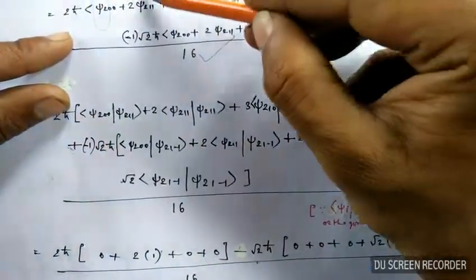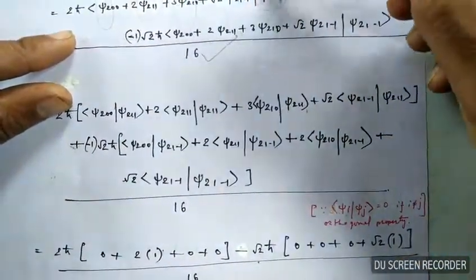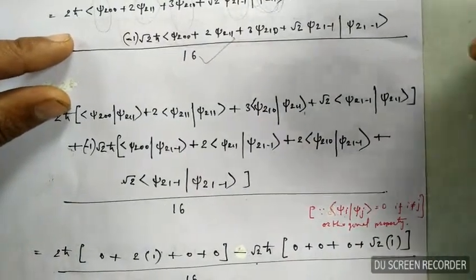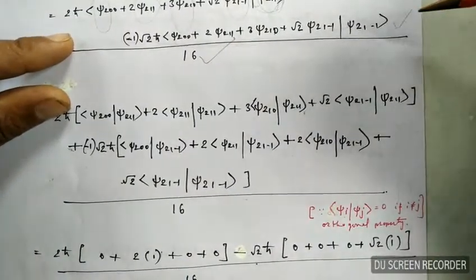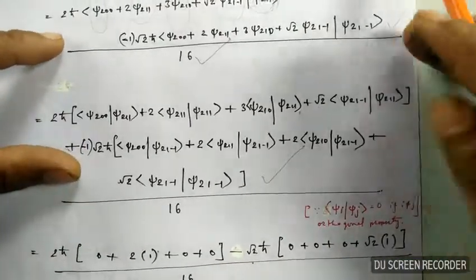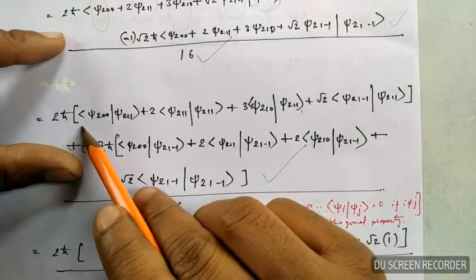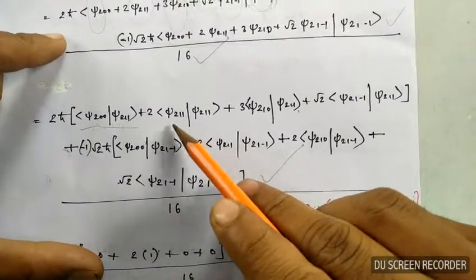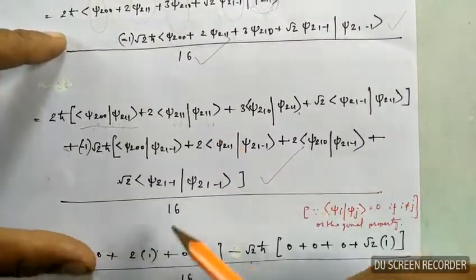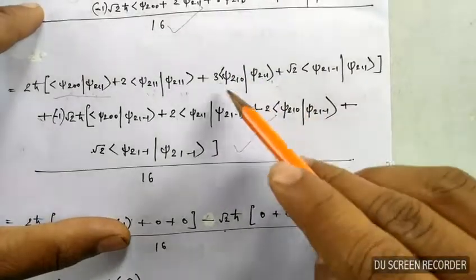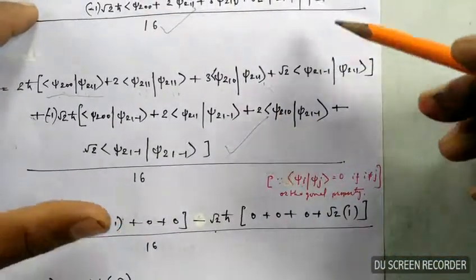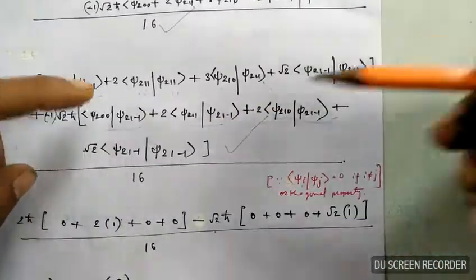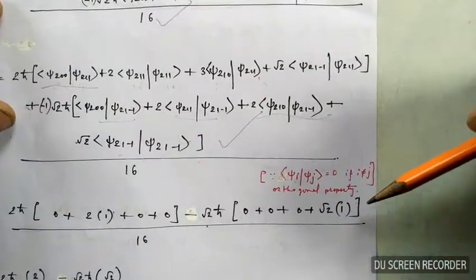You have to operate each term on the other terms sequentially. Using the orthonormality property again: when subscripts are unequal you get zero, and when subscripts are equal you get one. In this fashion, most cross terms vanish. You get zero here, zero here, one here, zero here, zero here — but for the last matching pair you get one.